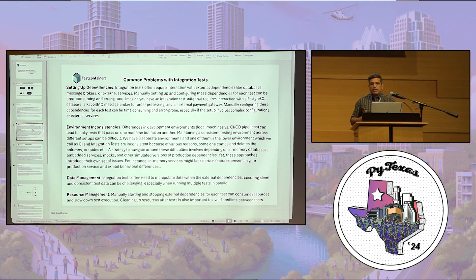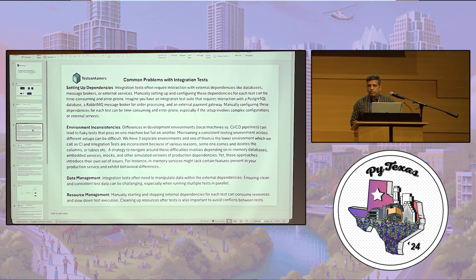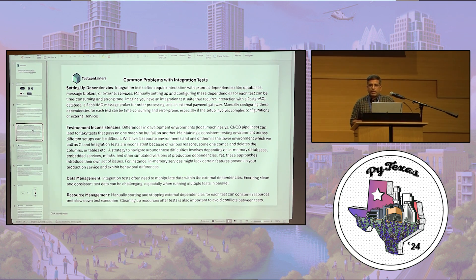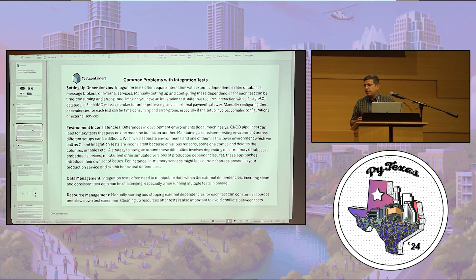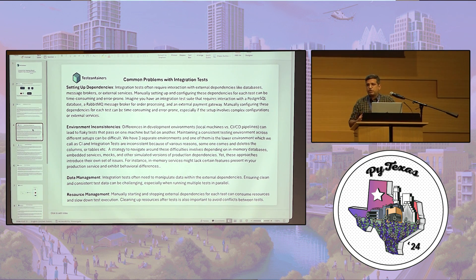This problem forces developers to think about another alternative: using in-memory databases or embedded tools like embedded Kafka or embedded Cassandra. However, the problem with in-memory databases and embedded tools is that we may miss certain features — for example, specific database functions or specific message broker features that are missing in those simulated tools.